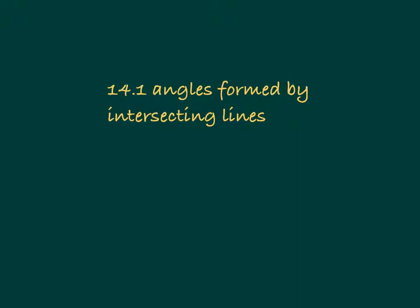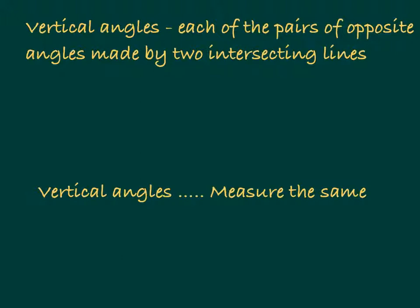Hello, today's lesson is 14.1 Angles Formed by Intersecting Lines. The definition of vertical angles is each of the pairs of opposite angles made by two intersecting lines. One thing you should really remember is that vertical angles measure the same.